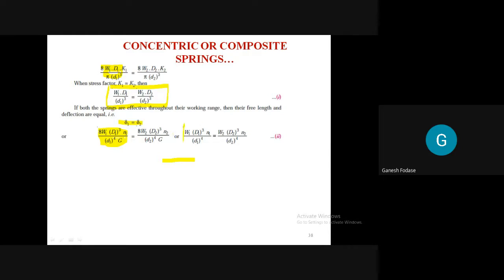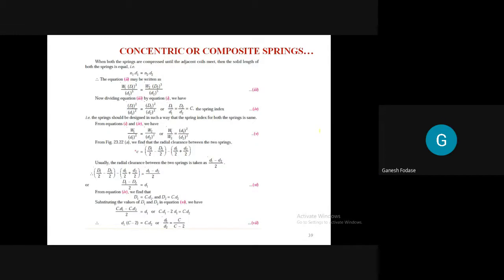Now let us use equations 1 and 2 to obtain further relations. We are solving for a concentric helical spring. We have two equations based on tau1 = tau2 and delta1 = delta2. If both springs are compressed until adjacent coils meet, the solid lengths of both springs will be equal. When the axial gap is zero, the solid lengths are equal, meaning N1·d1 = N2·d2.